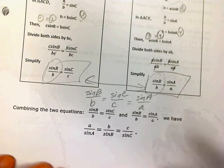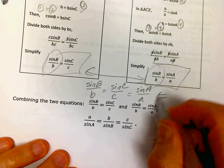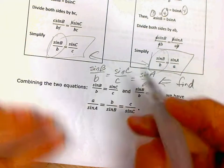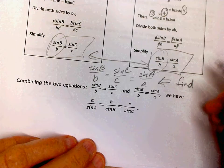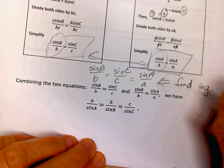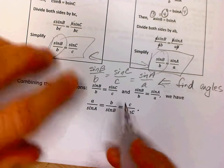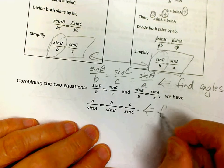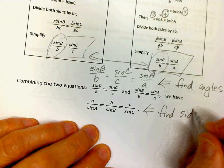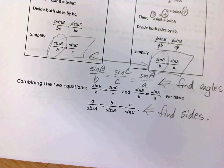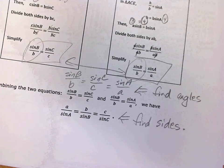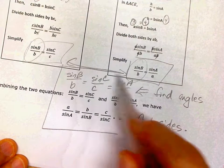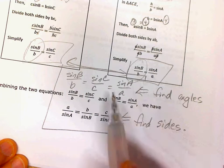You can use this version of the sine law. It's easier to use this one for angles because your angles are on top. And this is an equivalent expression of the sine law — use this one when you want to find sides because the sides are in your numerator. There they are: the two versions of the sine law.